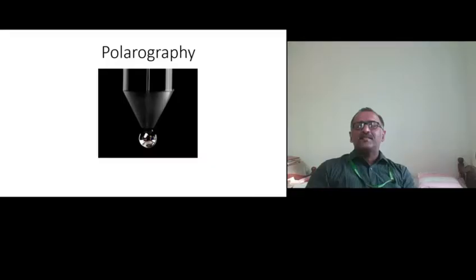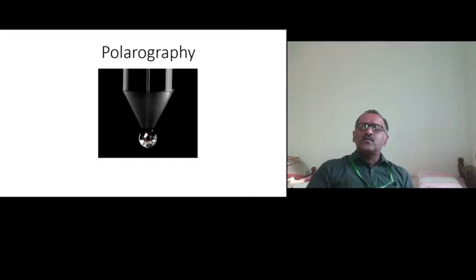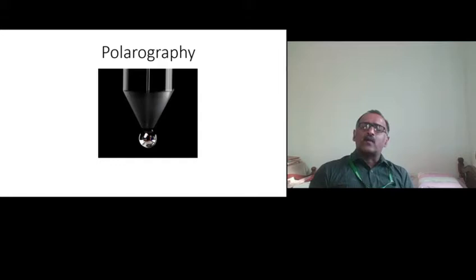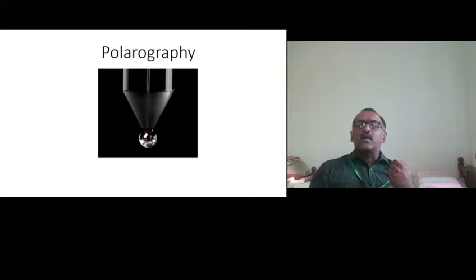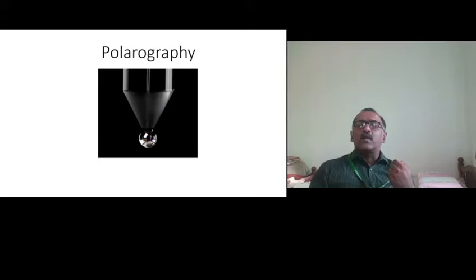The history of polarography begins with the dropping mercury electrode, which was invented by Jaroslav Heyrovsky. The special character of this electrode is that it can renew its surface continuously. In any experiment involving an electrode, the problem scientists face is that after a particular time, the electrode surface gets deposited with other materials or erodes, losing its original activity. The dropping mercury electrode removes all these difficulties. In 1922, Heyrovsky invented it and received the Nobel Prize in Chemistry in 1959.